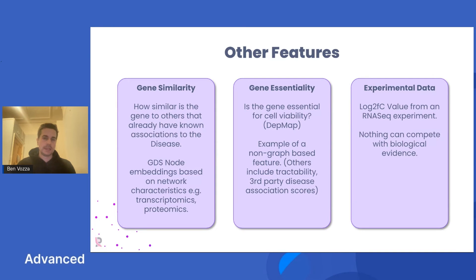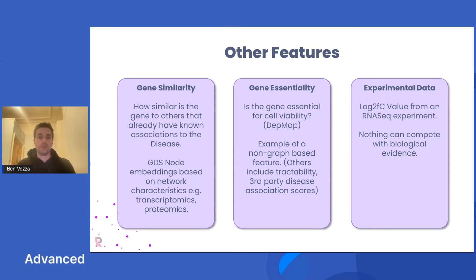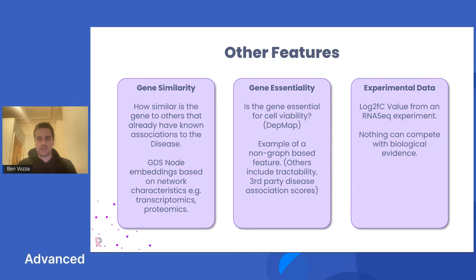You may also want to include non-graph-based features in your recommendation system, such as drug ability or tractability, or gene essentiality for cell viability — for example, if you knock out this gene, will it cause the cell to die? You also want to consider any third-party disease association scores; Open Targets, for instance, has disease association scores for all genes. Additionally, any experimental data you have internally — such as an RNA-seq study with differential expression between healthy and disease states — can provide a log2 fold-change value as a feature in your recommendation system.